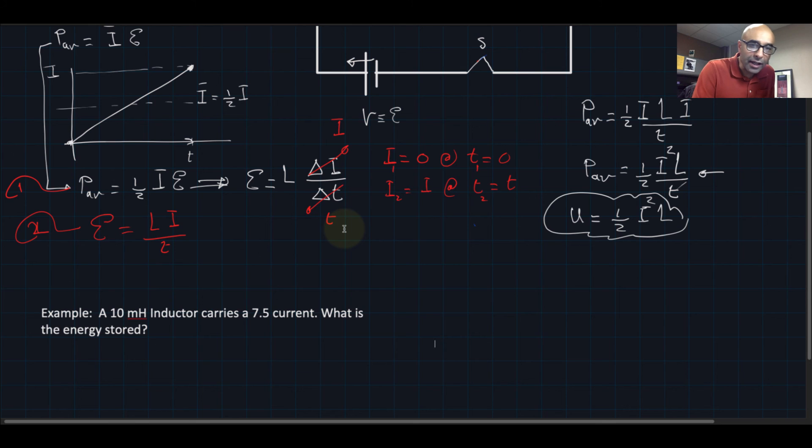So let's have an example. A 10 millihenry inductor carries a 7.5 current. What is the energy stored in this one? So we can say U is equal to one half times the current squared times L, and we can just plug in the numbers: one half times the current squared, which is here—carries 7.5 current in amps—so that would be 7.5 squared times L, which is 10 millihenry, times 10 to minus 3. So if we do this calculation together quickly, and after doing the calculations, the answer would be 0.28125, and this is energy measured in joules.